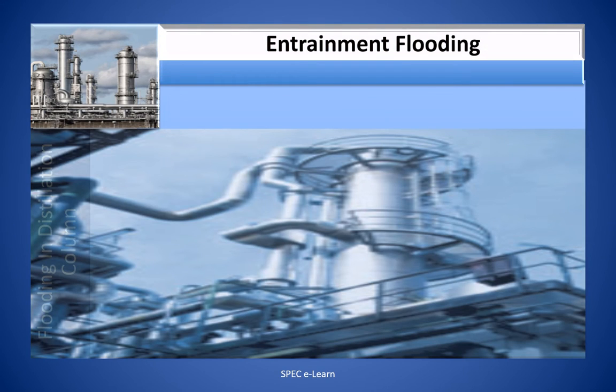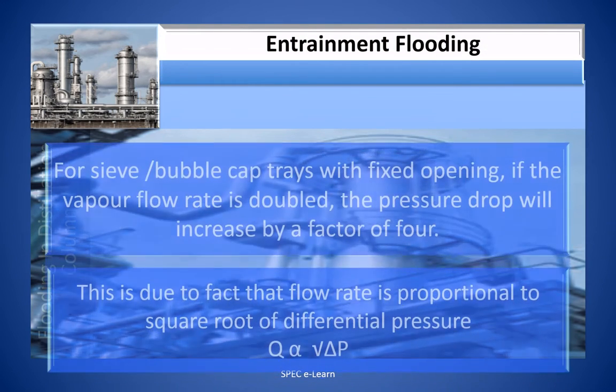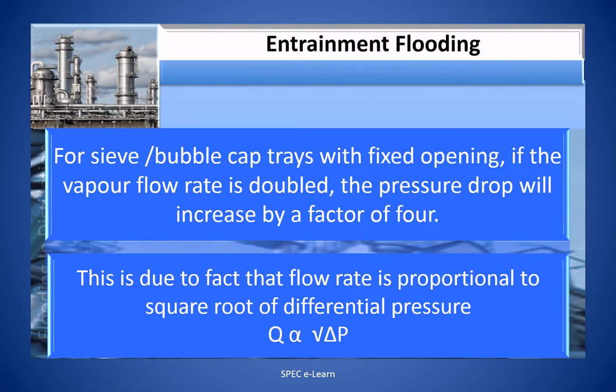For sieve and bubble trays with fixed openings, if the vapor flow rate is doubled, the pressure drop will increase by a factor of 4. This is due to the fact that flow rate is proportional to the square root of differential pressure.